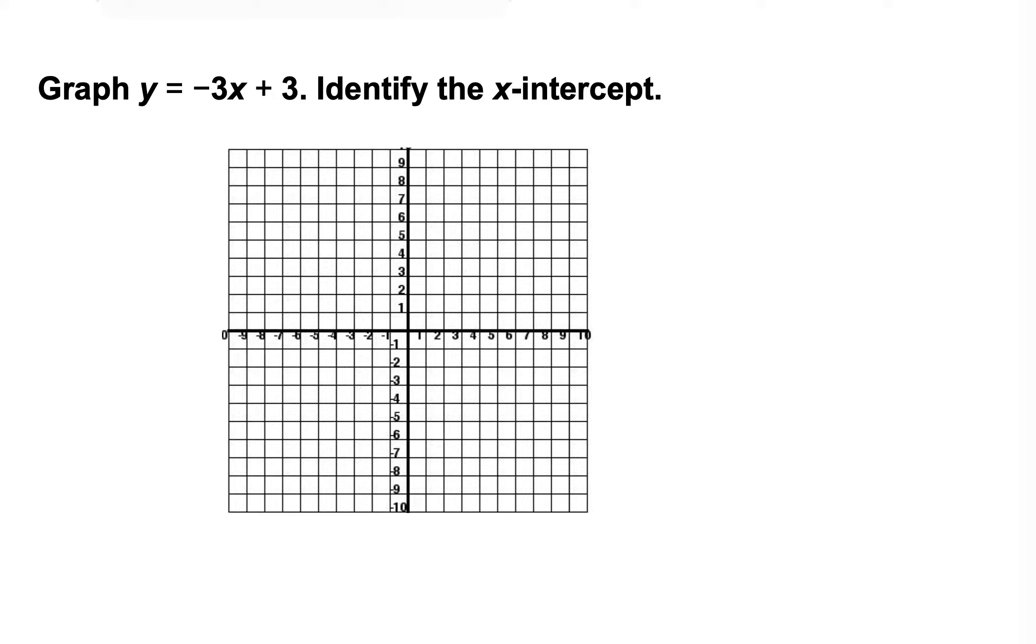Slope-intercept form is very handy because it's a fast way to graph. It's a lot faster than making a table and picking five points and solving the equation five times and then graphing those points. Here's how we use slope-intercept form to graph. It says graph y equals negative 3x plus 3 and identify the x-intercept. It doesn't say you have to use slope-intercept form, but I'm going to show you a shortcut for graphing when you have slope-intercept form.